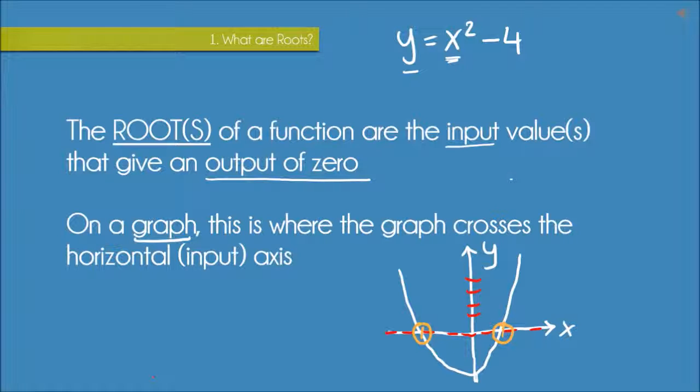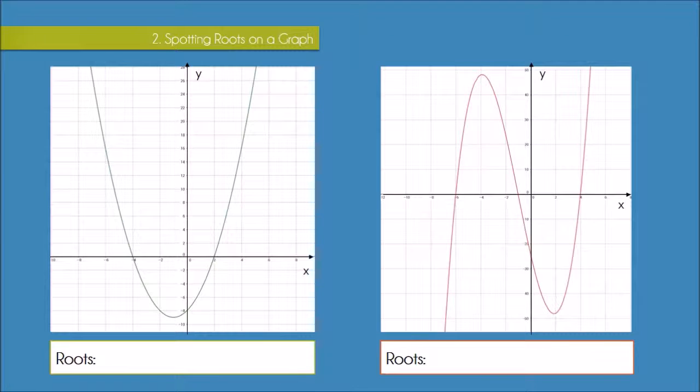So here we're given the graphs of two functions and we just need to find the roots. So remember that when we are given the graph of a function we can easily read off the roots just by looking at where the graph crosses the horizontal axis. So in this case where we have x and y axes, it's just where the graphs cross the x axis.